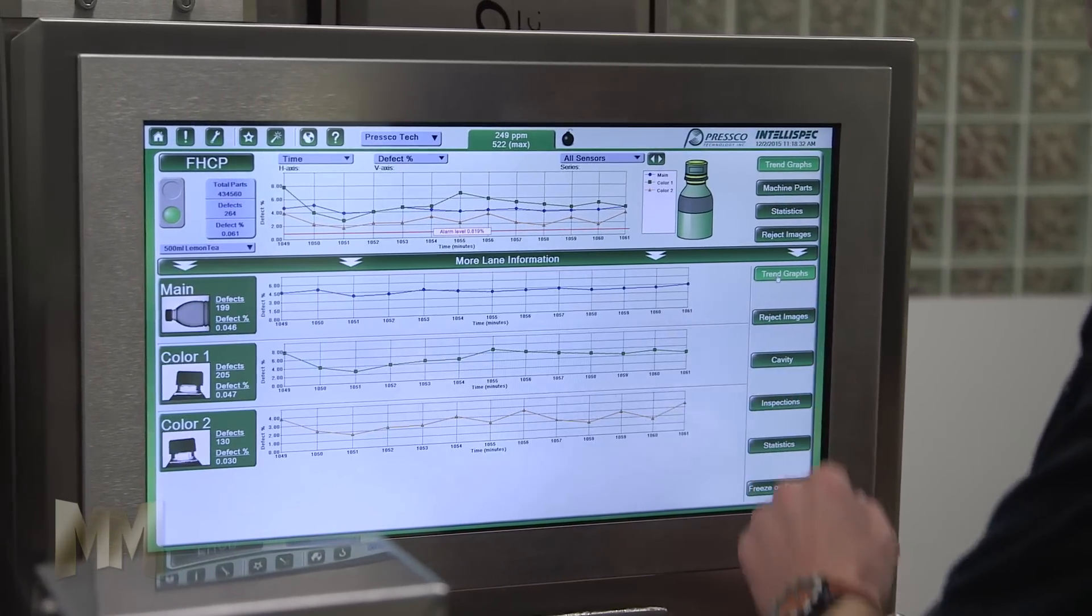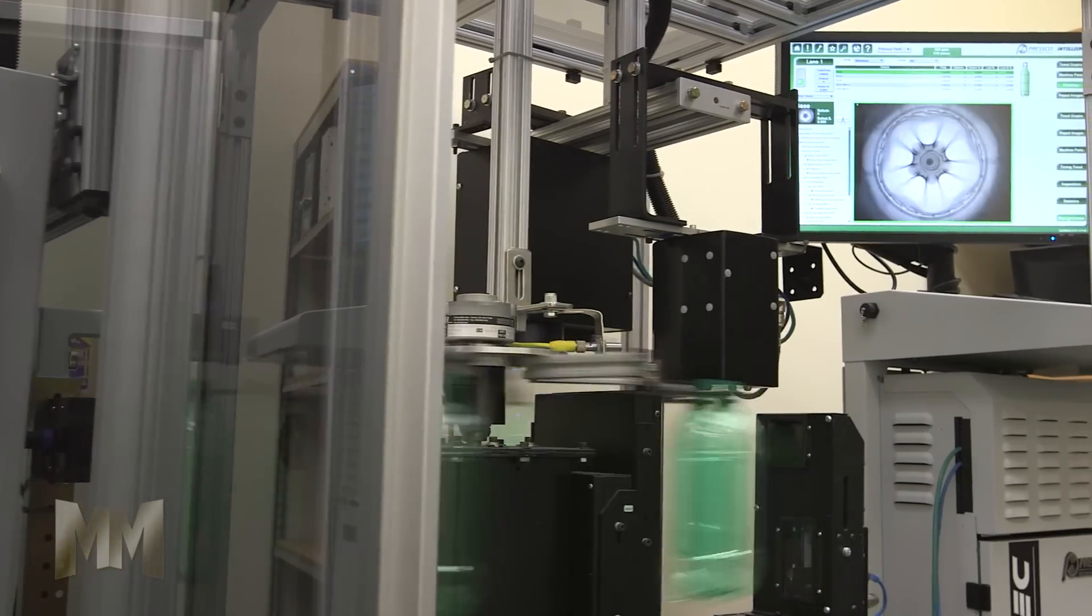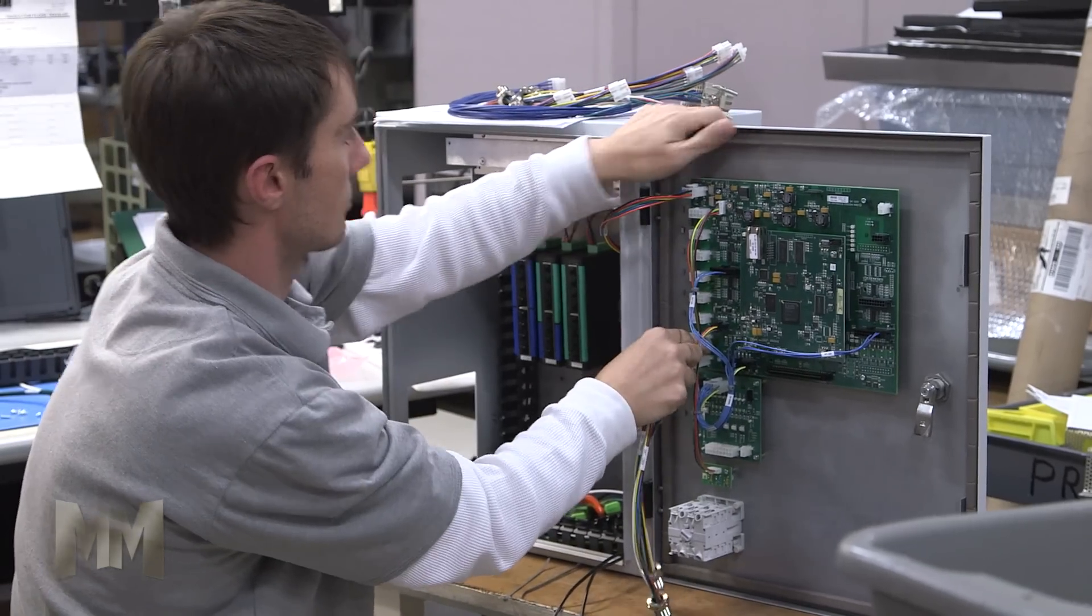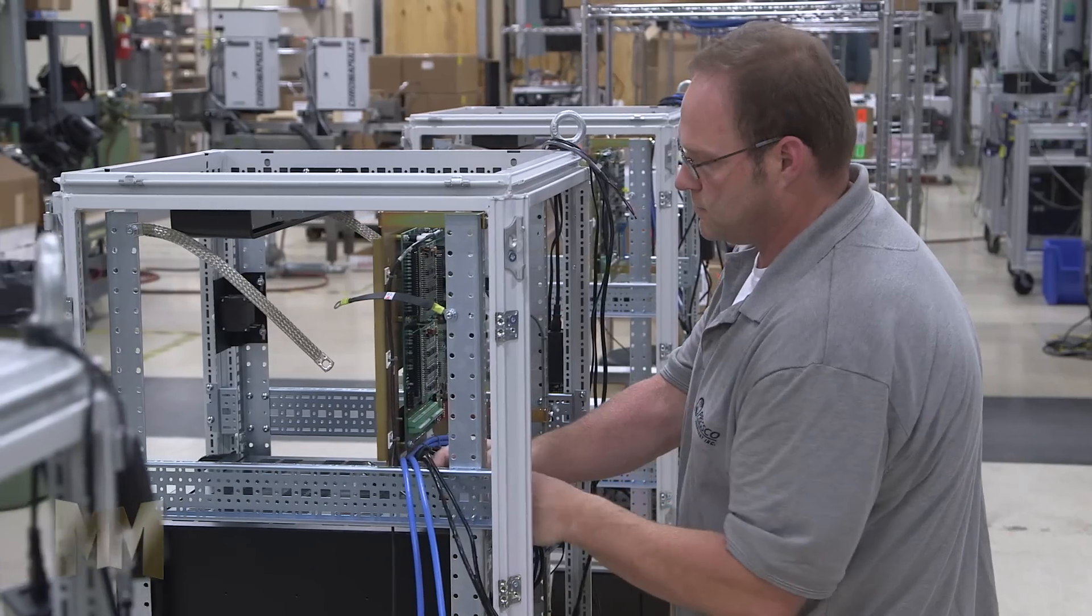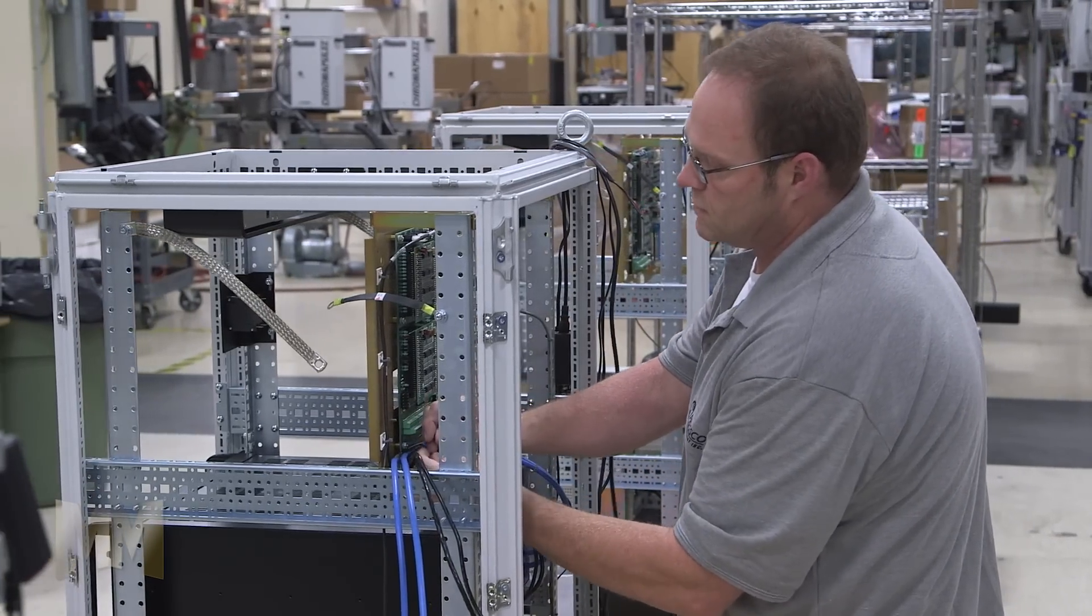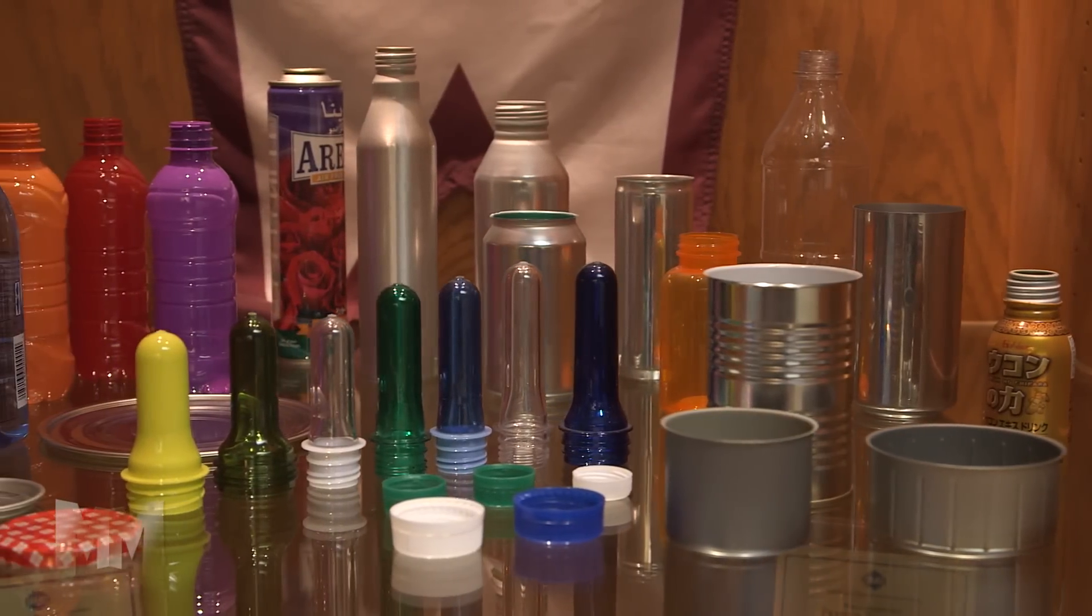Presco systems help businesses reduce operating costs and improve efficiency. Configured to each customer's application, they detect flaws and monitor quality indicators on a wide range of metal and plastic containers.